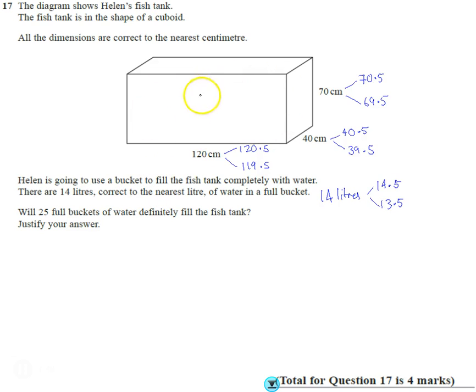If we did it the other way around—the smallest possible tank with the biggest possible bucket—that would give us the least number of buckets needed. But we want to see if 25 will fill it up, so we consider the worst case.